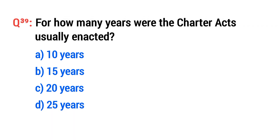Question thirty-nine: For how many years were the Charter Acts usually enacted? The right option is C: 20 years.